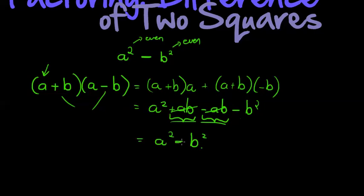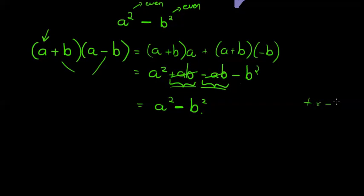And since there are different signs in here, they end up being negative because positive times negative is negative and negative times positive is negative. So when signs are different and they get multiplied, we always get a negative. So this is what we get: a squared minus b squared.